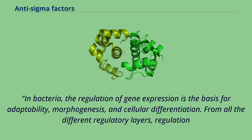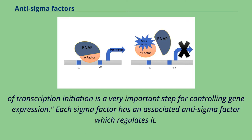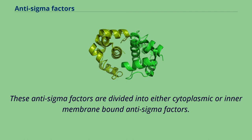In bacteria, the regulation of gene expression is the basis for adaptability, morphogenesis, and cellular differentiation. From all the different regulatory layers, regulation of transcription initiation is a very important step for controlling gene expression. Each sigma factor has an associated anti-sigma factor which regulates it.